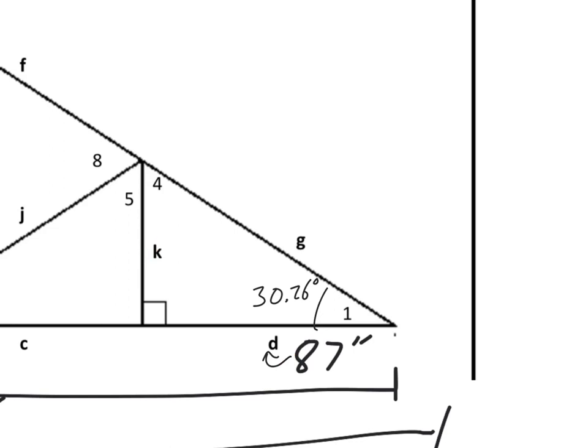Well, K, we can use tangent. Tangent is opposite over adjacent. So we can say tangent of 30.26 is K over 87. Remember that? Now all we need to do is multiply both sides by 87, and you can solve for K. I'll let you do that.